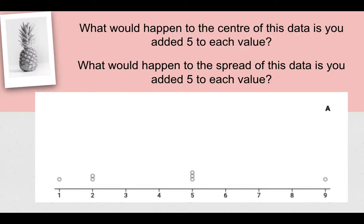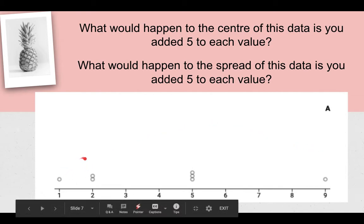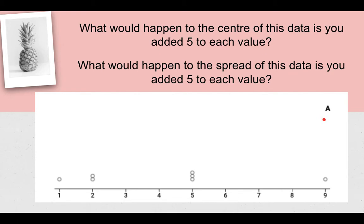Let's have a look here. We've got some random distribution. There's one one, two twos, three fives, and a nine in my distribution, and I'm calling it A. So what would happen to the center of this data as you added 5 to each value? And what would happen to the spread of this data as you added 5 to each value? Think of it graphically, what would happen to that graph when you added 5 to everything?